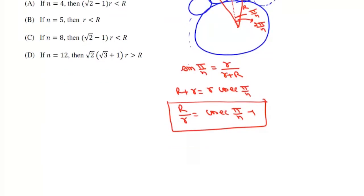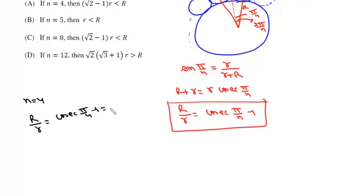For option A, it says if n = 4 then r is greater than R·(√2 − 1). If we put n = 4, we get r/R = csc(π/4) − 1 = √2 − 1. So in this case r equals (√2 − 1)·R and not greater than that. This means option A is incorrect.